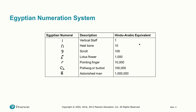Some of the older systems went up to much larger numbers. In the Egyptian numeral system, the pictures got quite elaborate: you have the vertical staff, the heel bone, scroll, lotus flower, pointing finger representing 10,000 for instance. A polliwog or burbot represented 100,000, and the Astonished Man represented a million.